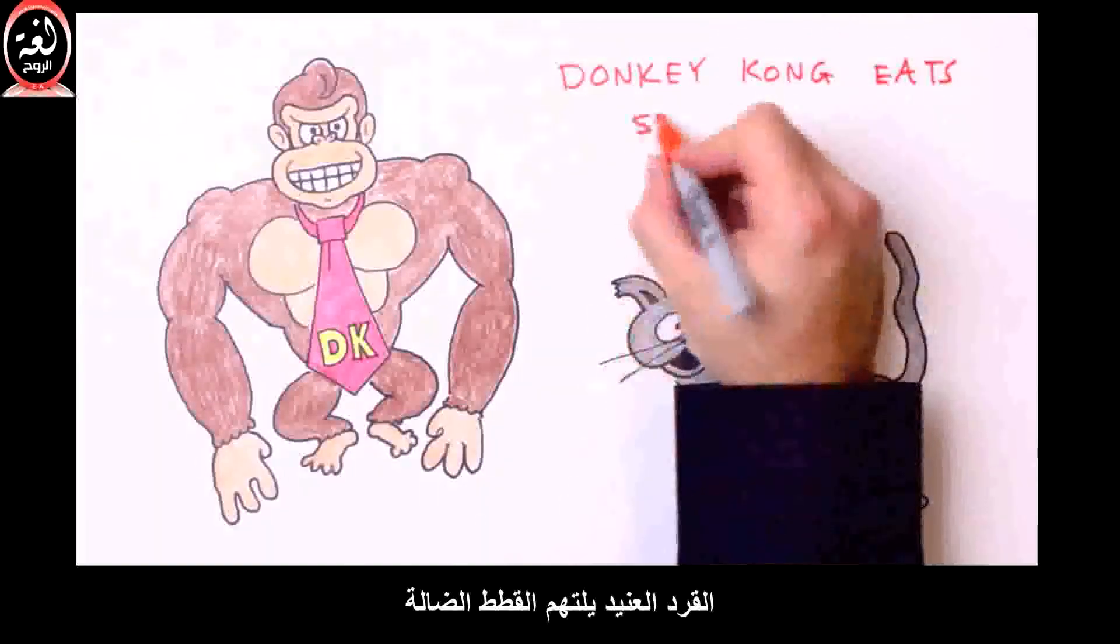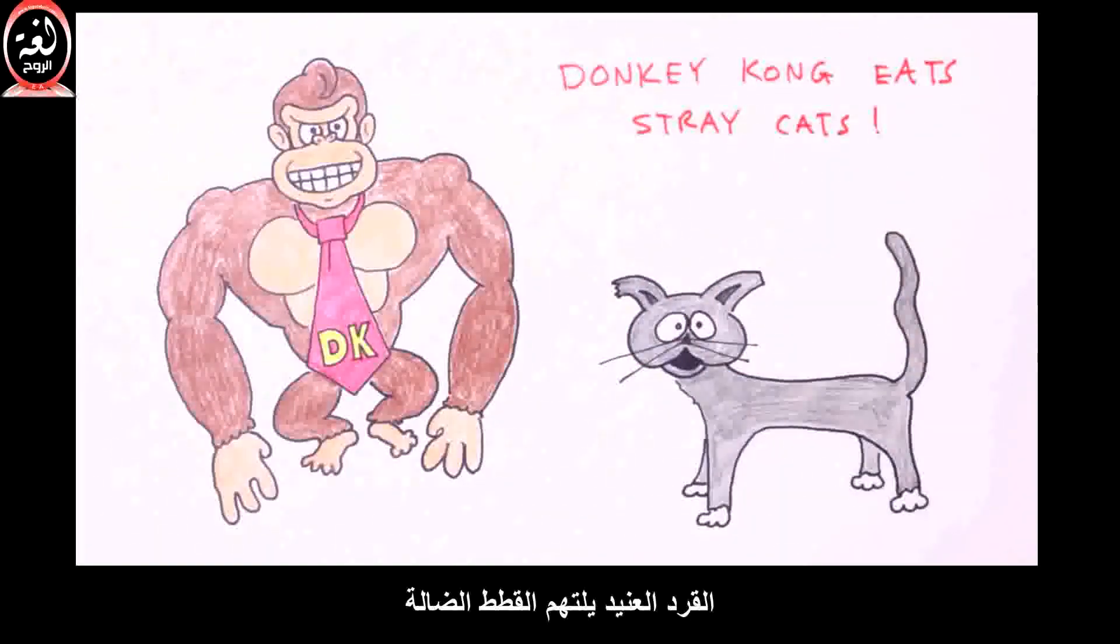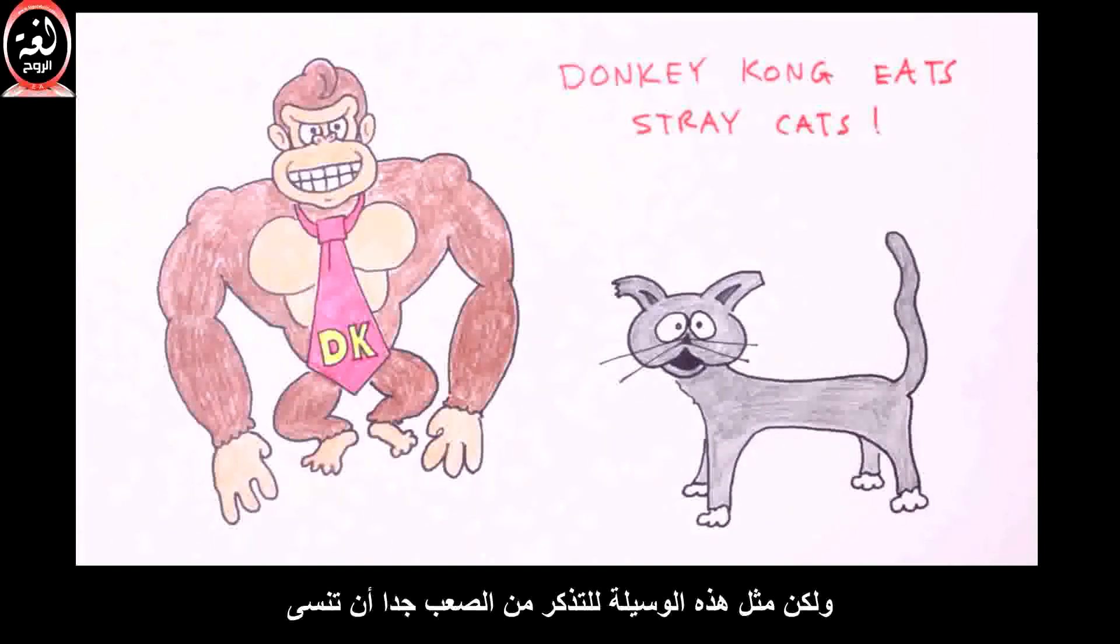Donkey Kong eats stray cats. No, it's not very humane, nor is it even accurate. Everybody knows that DK is a strict banana whore. But such a hilariously graphic mnemonic device is pretty hard to forget. And that's the mark of a good mnemonic device.